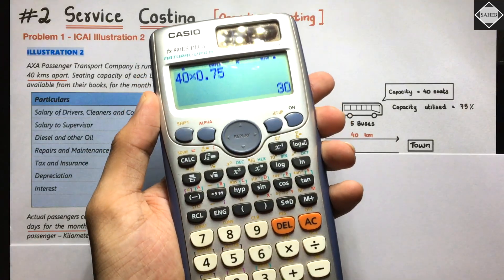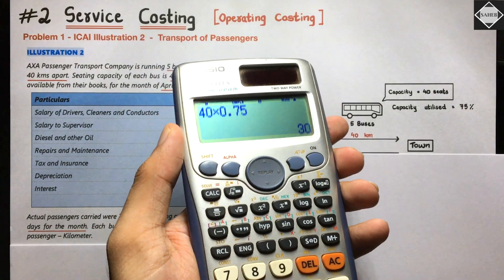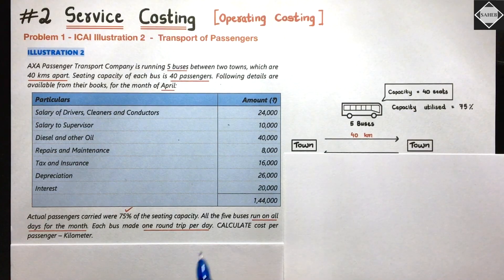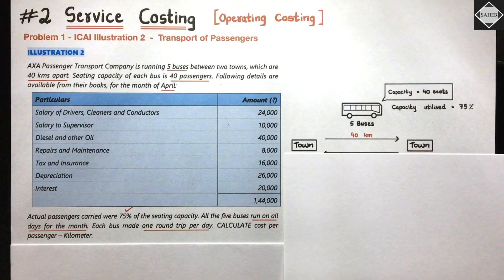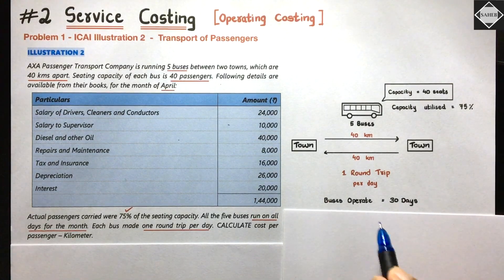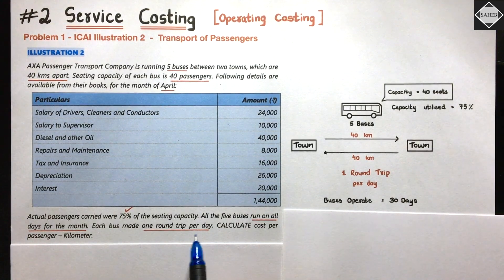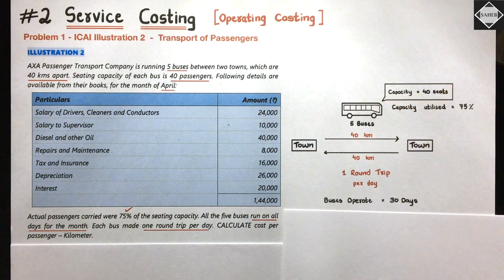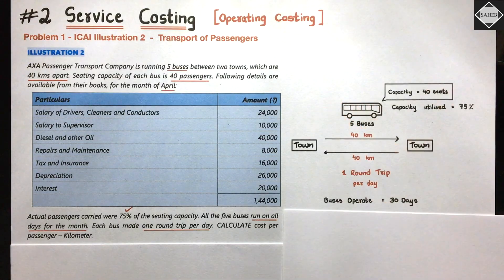Out of 40 seats, on average 40 × 0.75 = 30 seats are occupied. All five buses run on all days of the month. April has 30 days, so the operating days are 30. Each bus makes one round trip per day - meaning going and coming back - so that's two single trips per day.